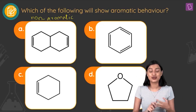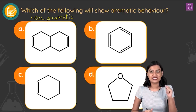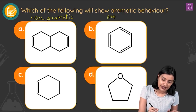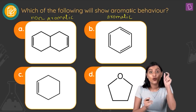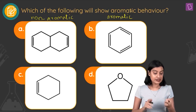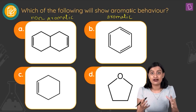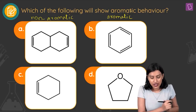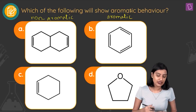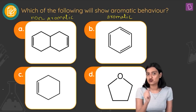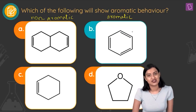Option C is a cyclohexane ring with one double bond — it is planar but does not have conjugation, so it is non-aromatic. Option D also lacks conjugation, making it non-aromatic as well. Among all options, only benzene shows aromaticity, so option B is the right answer to this question.